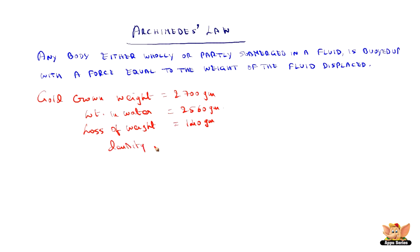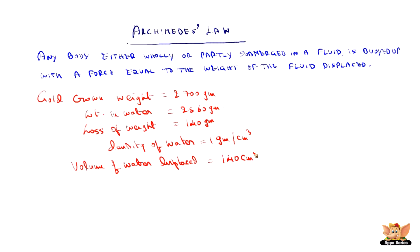We know the density of water, which is 1 gram per centimeter cube. The volume of water displaced is also 140 centimeter cube, because this is the weight of water displaced. As per Archimedes, this becomes the weight of the fluid — in this case, water. Hence, the volume of water displaced becomes 140 centimeter cube, which is nothing but the volume of the crown also.